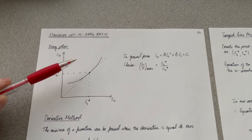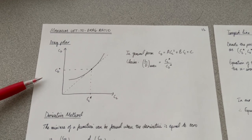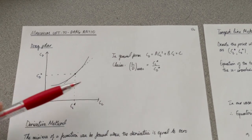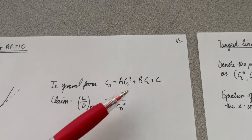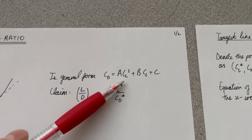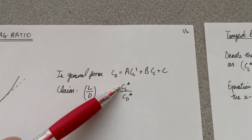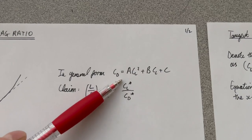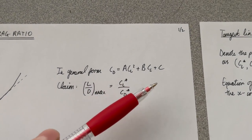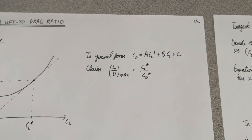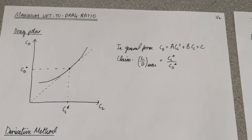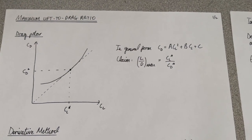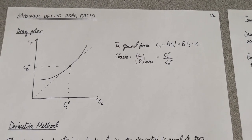The drag polar has the general form: CD is a quadratic function of CL, written in general form as ACL² + BCL + C constant. I'm going to show how you can find the maximum lift-to-drag ratio by two different methods, the first one being a derivative method.